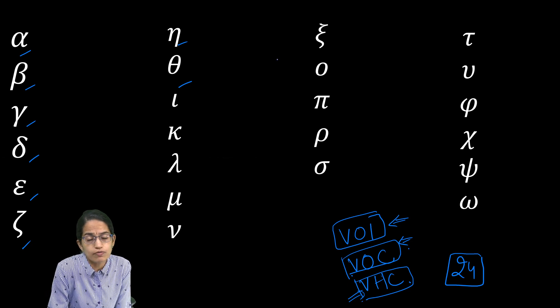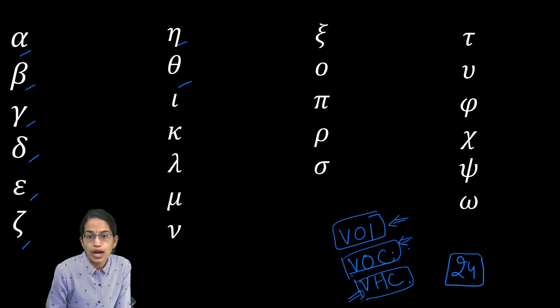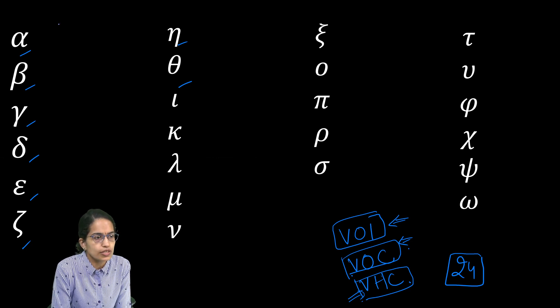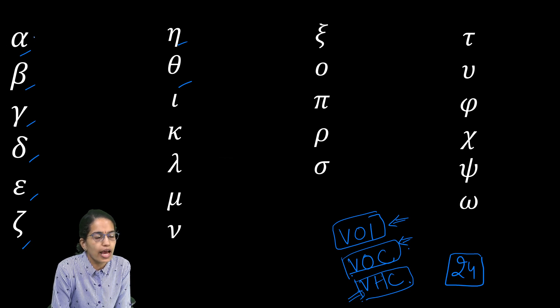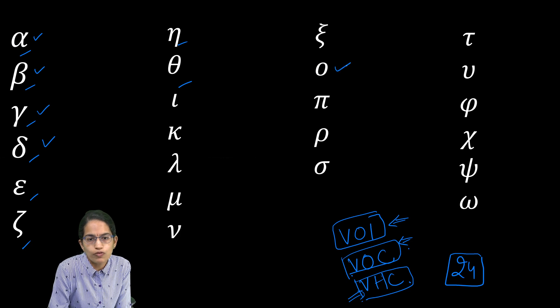To begin with, let's classify them as variant of concern or variant of interest. As we know, alpha, beta, gamma, delta, and omicron have been considered as the variants of concern. So these five are the variants of concern.